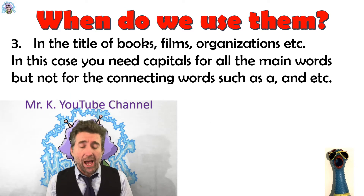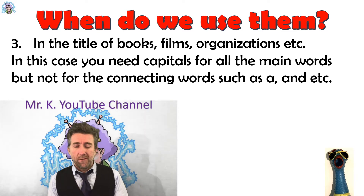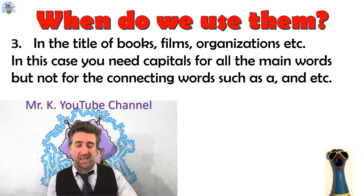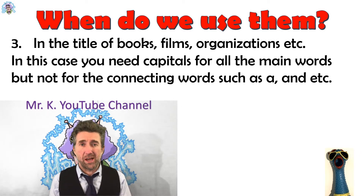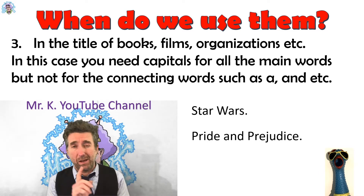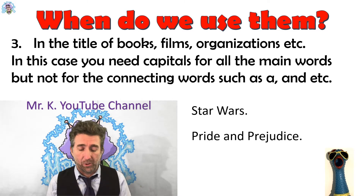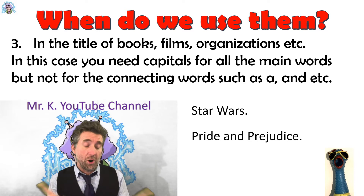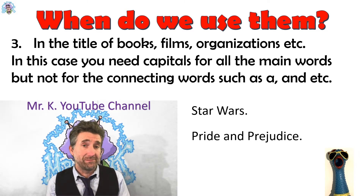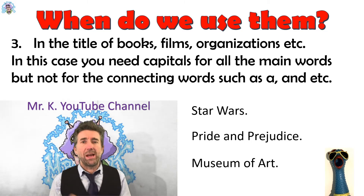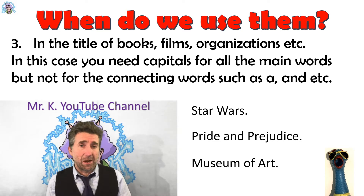The third time when we would use a capital would be in titles of books, films, or organisations. And they are always for the main words in the titles, but not for connecting words such as 'a' or 'as.' So here are a couple of examples: Star Wars — that's the title of a book but also a movie, and both words start with a capital. Then Pride and Prejudice — it's the name of a book. The main words, Pride and Prejudice, both start with capitals, but the connecting word 'and' doesn't. And our last example is the Museum of Art — 'Museum' and 'Art' are main words and both start with a capital, but the connecting word 'of' doesn't.